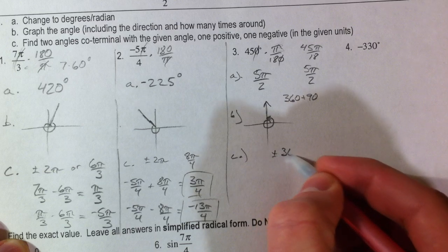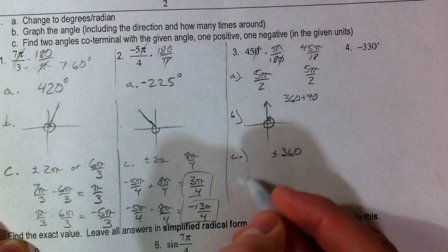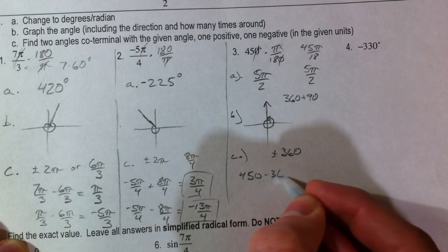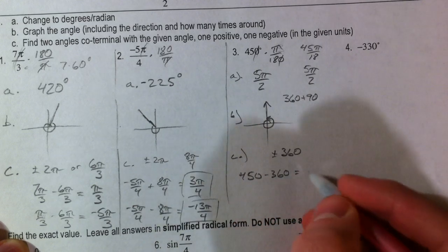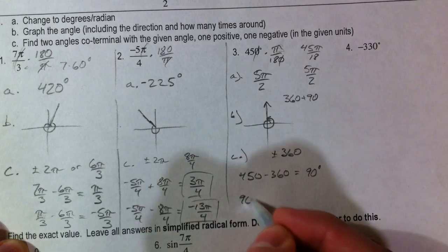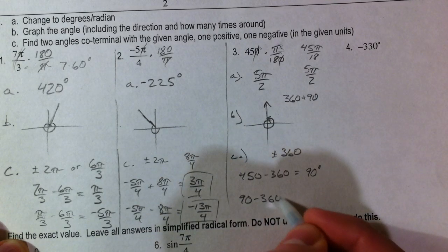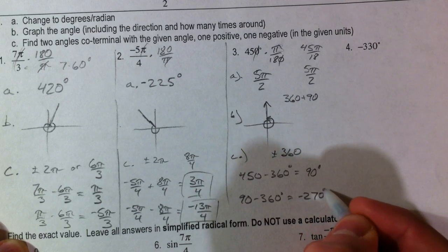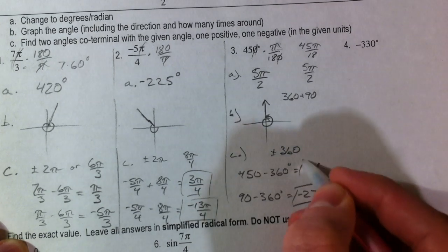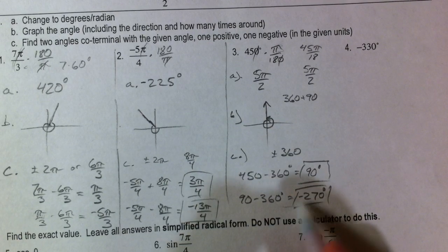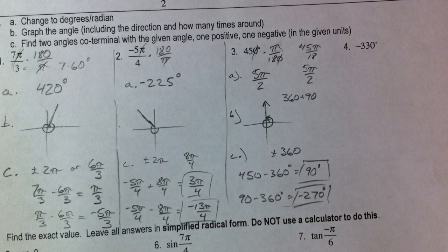Add or subtract 360 to find a coterminal angle. So, 450 minus 360, 90 degrees coterminal. If we do another 90 minus 360, negative 270 degrees. So, one positive, one negative. There are infinite answers for questions like these, because you can keep adding and subtracting 360 however many times you want.